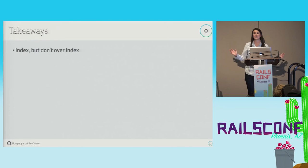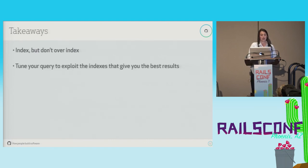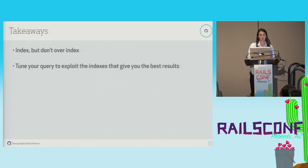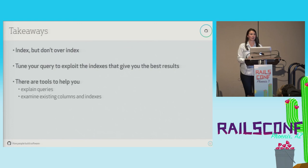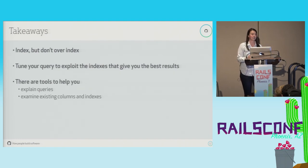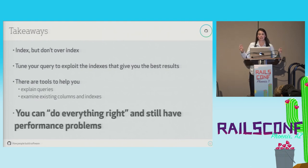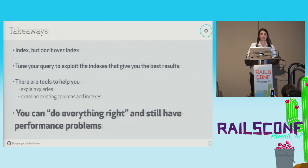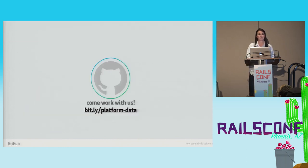Some takeaways: index but don't over-index — nothing comes for free; indexes take space and they slow down inserts, updates, and deletes. Tune your query to exploit the indexes that give you the best results — sometimes it's not about adding an index, it's about changing your query to use the right one. There are tools to help you — I encourage you to run EXPLAIN on your queries and try to understand how they're being processed. Make sure you examine existing columns, tables, and indexes before you make any changes. You can do everything right and still have performance problems — the point of this talk is that you can follow all these rules and still see problems, so you need to really understand what's going on under the hood and get creative in certain situations. We are hiring on the Platform Data Team — if any of this interests you I'd love to talk to you. Thank you.